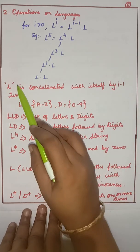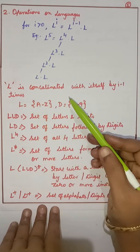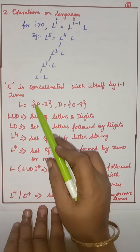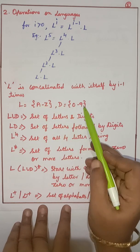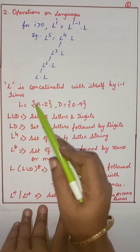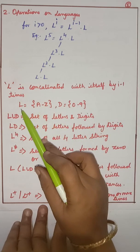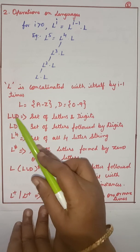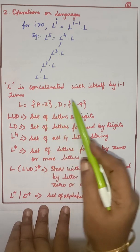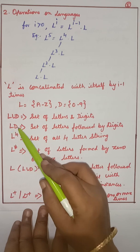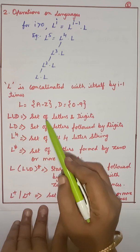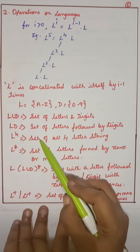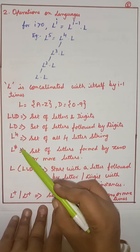Let L be the set {a to z} — the language consisting of alphabets — and D be {0 to 9}, the digit set. L union D is the set of letters and digits combined, a to z and 0 to 9. LD means digits appended to letters — letters first, followed by digits. L^4 is the set of all four-letter strings. L* is the Kleene closure — set of strings formed by zero or more letters.